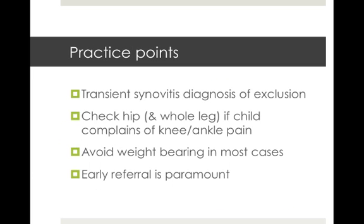Practice points for paediatric hip pain: transient synovitis is definitely a diagnosis of exclusion — think about all serious causes before labelling a child with that. Check the whole leg and hip if a child complains of knee or ankle pain, and vice versa. Avoiding weight bearing in most cases is recommended and crutches are often used. Early referral is paramount — many of these kids can suffer long-term consequences if serious pathology is missed, and an orthopaedic surgeon will never be angry at you for checking out a kid's hip if you're worried.